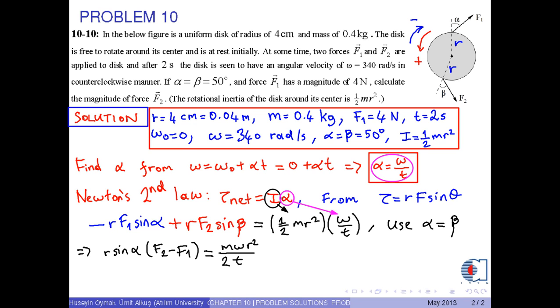After some operations, we get an expression for F2 as m times omega times r over 2 times t times sin alpha plus F1.